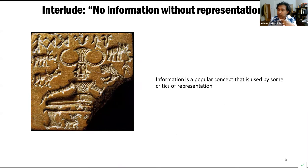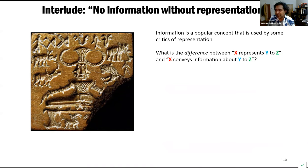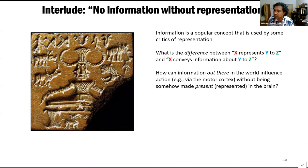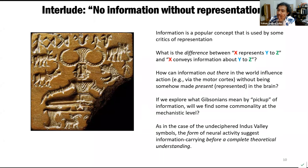Before getting to more uses of representation within neuroscience, I'd like to pause and talk about information, because as those familiar with Gibsonian psychology know, information is a popular concept there. They say yes to information, but no to representation. I'd like to ask: what is the difference between saying 'X represents Y to Z' and 'X conveys information about Y to Z'? Is there really any difference? Also, how can information out there in the world influence action via motor cortex without being somehow made present in the brain? If we explore what Gibsonians mean by 'pickup' in mechanistic detail, we may find it's just a matter of different terminology for analogous processes. Just as with the undeciphered Indus Valley symbols, the form of neural activity suggests information-carrying even before a complete theoretical understanding has emerged.